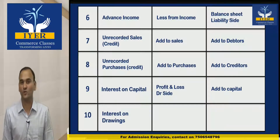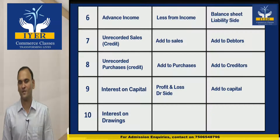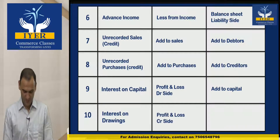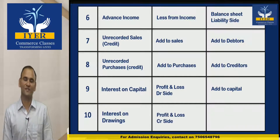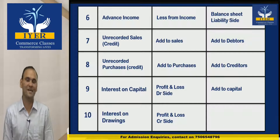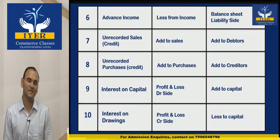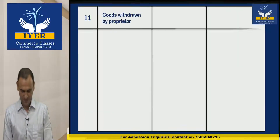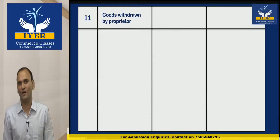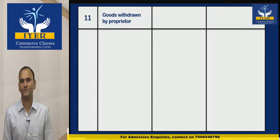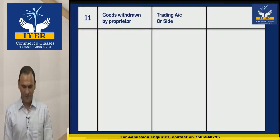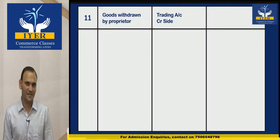The next one is Interest on Drawings, and the two effects are: Profit and Loss credit side, and less from capital. The next one is Goods Withdrawn by Proprietor, and the two effects are: Trading Account credit side, and less from capital.